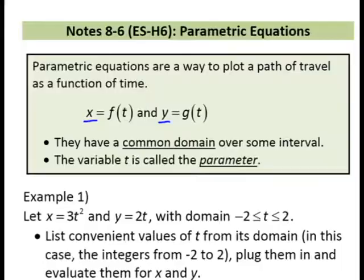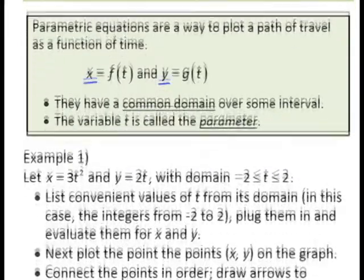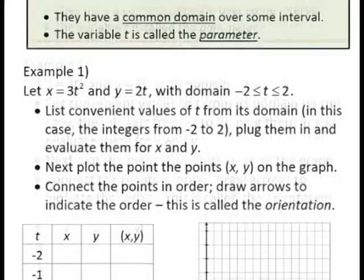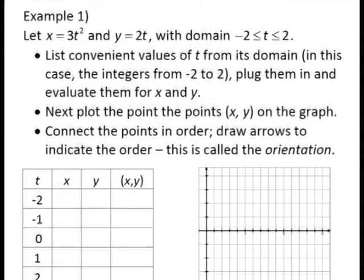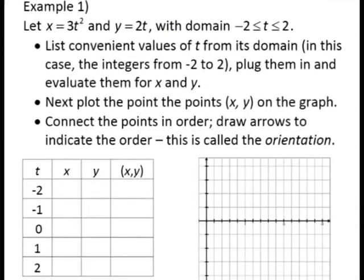Take a moment to read through this first example. Here is our parametric equation. It's this pair of equations putting x and y both in terms of t. In this case, t is going to run from negative 2 to 2.